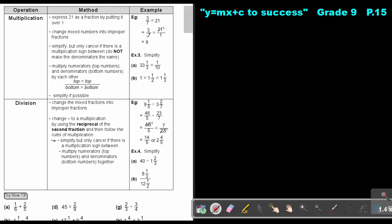Let's go to multiplication. If I look at multiplication, remember, express the 21 as a fraction by putting it over 1. Make everything fractions over 1. Change the mixed numbers also to improper fractions if it's there. Now simplify, but only cancel if there's a multiplication sum. So you can only cross-cancel if there's a multiplication sum. You do not make the denominators the same. You only make it the same in addition and subtraction. So you say 7 go in 1 time, 7 go in 3 times. So 3 times 3, that will be 9.